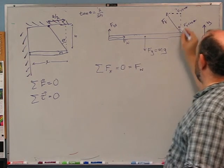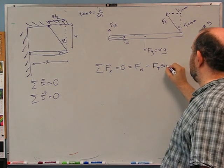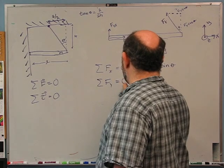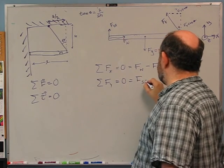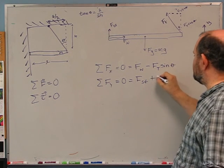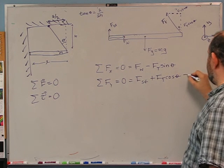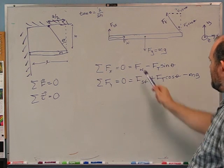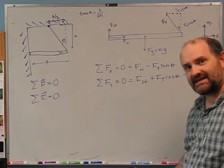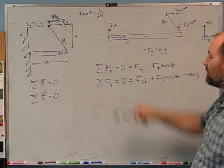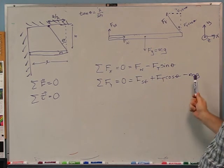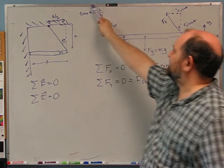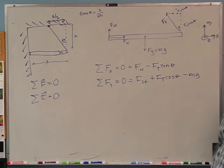The sum of the forces in the y direction has to be zero. Fsf is entirely in the y direction, Ft cosine theta is in the plus y direction, and mg is in the minus y direction. So I have two equations but three unknowns: Fn, Ft, and Fsf. I need another equation — I have torque. Remember, the first thing you do with torque is pick a pivot point. I'm going to pick this end as my pivot point, which will make my life easy, because the lever arm for both the normal force and static friction is now zero — they exert no torque.